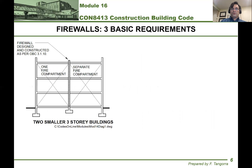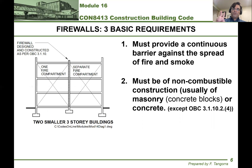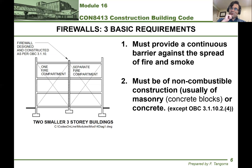Let's look at the three basic requirements of firewalls. The first one is that a firewall must be continuous. As a barrier, it has to be continuous to prevent smoke and fire from traveling from one part of a building to another. Two, it must be non-combustible. We've discussed what non-combustible means in previous lectures. Typically this means they're usually made out of masonry, which is the fancy engineering word for concrete blocks or concrete.